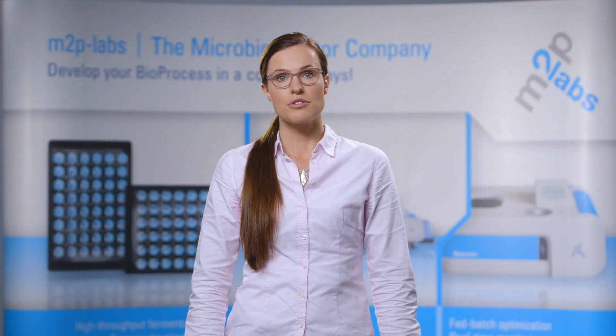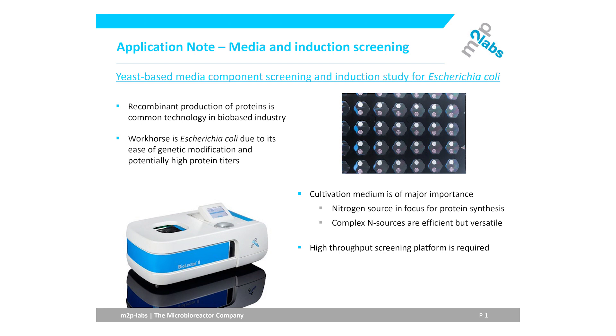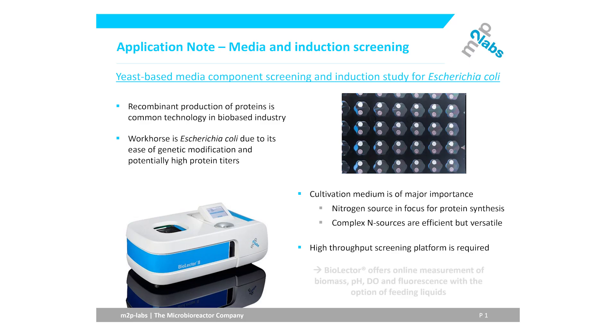The nitrogen source is of focus for protein production. Especially complex nitrogen sources are often efficient but also very versatile. To screen for different media, a high-throughput platform is required. The Bio-Electro system offers online measurement of biomass, pH, dissolved oxygen, and fluorescence with the option of automated liquid feeding.